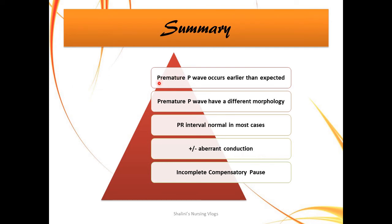To summarize the features of a premature atrial complex: the premature P wave occurs earlier than expected. The premature P wave can have a different morphology — positively deflected if the ectopic focus is in the atrium (and will be sharper and steeper than normal P waves), or negatively deflected if it is near the AV node. The PR interval is normal in most cases but may be prolonged if the previous beat has not fully conducted. Aberrant conduction can occur if there is a bundle branch block. There is always an incomplete compensatory pause, so the beat after the premature beat occurs a little earlier than expected.